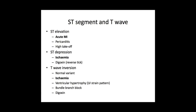The T waves can either be normal, inverted, or peaked — but we'll focus here on T wave inversion. Occasionally it can just be a normal variant: you can get T wave inversion in AVR and V1 and it's completely normal. However, it's important to consider ischemia as a cause of T wave inversion, particularly if it's something new — you can check that by comparing with previous ECGs.